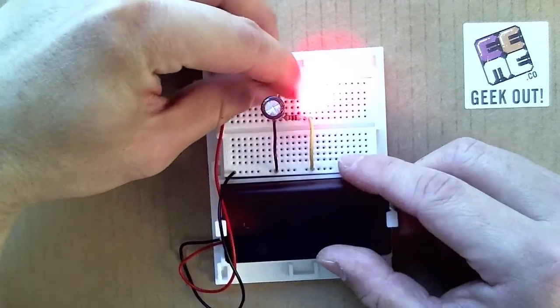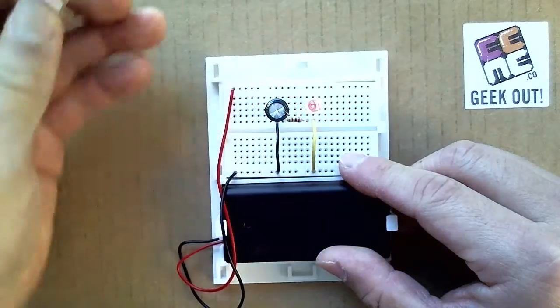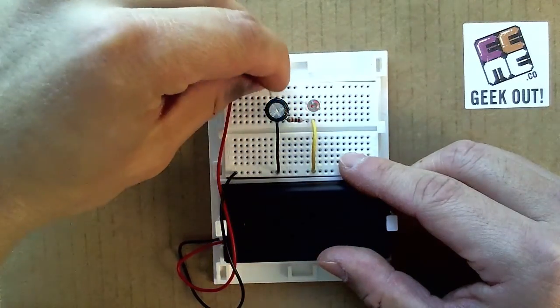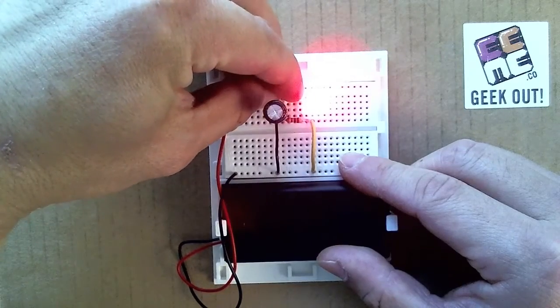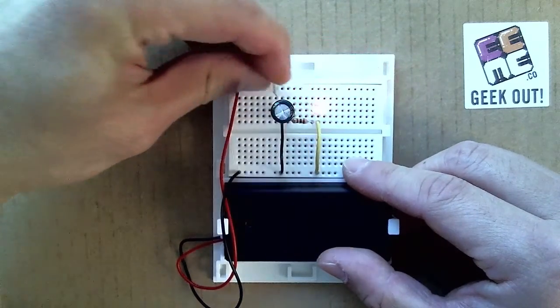You are seeing firsthand how electric charge stored in a capacitor can continue to provide electric current to flow through the LED well after the batteries have been disconnected.